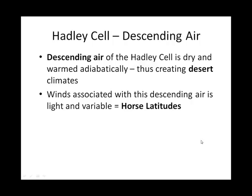Just in that region where the Hadley cell ends in the northern and southern hemisphere, those odd sorts of winds associated with the descending air are what we call the horse latitudes. Historically, they were called the horse latitudes because sailors got stuck in that part of the global circulation where there was little wind. Without wind to power their ships, sometimes they had to throw their horses overboard to reach their destination.